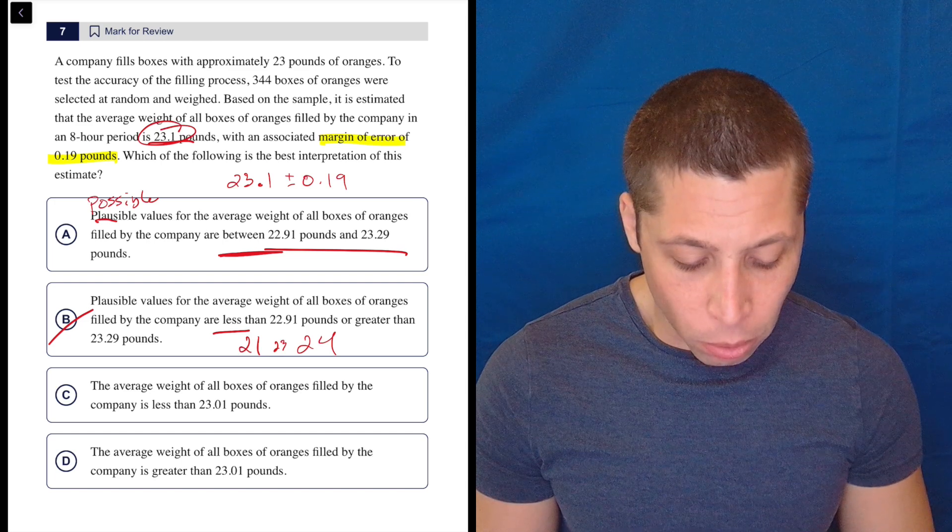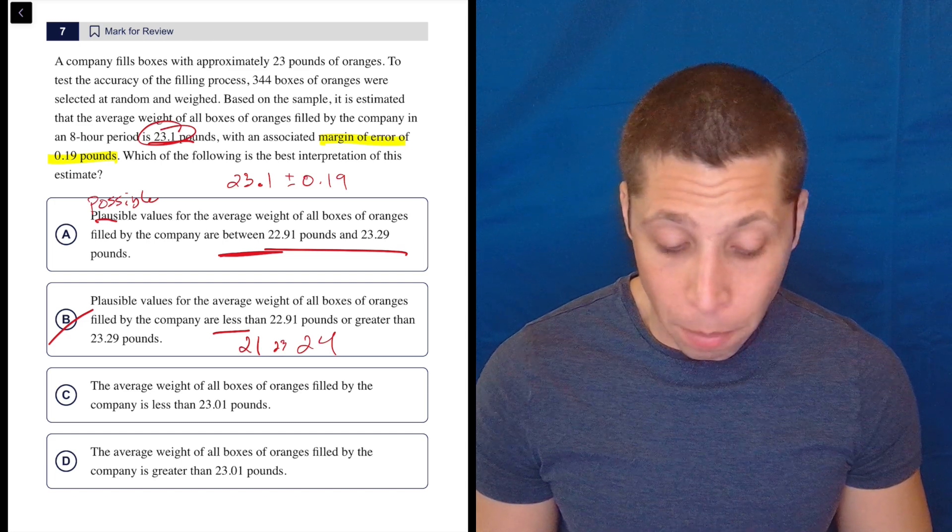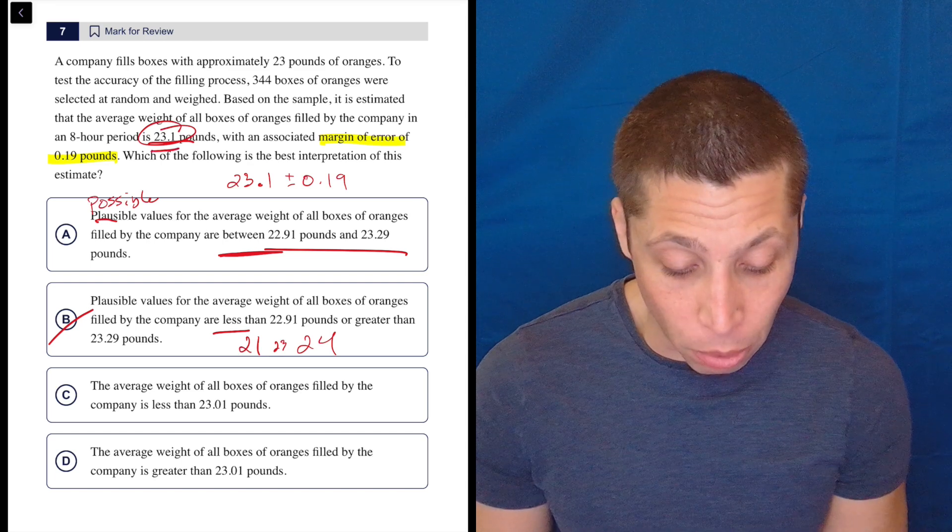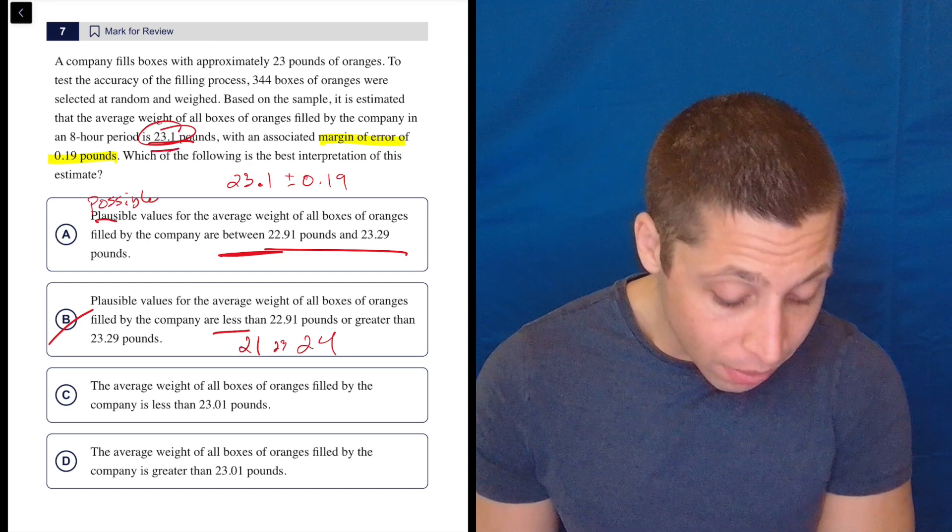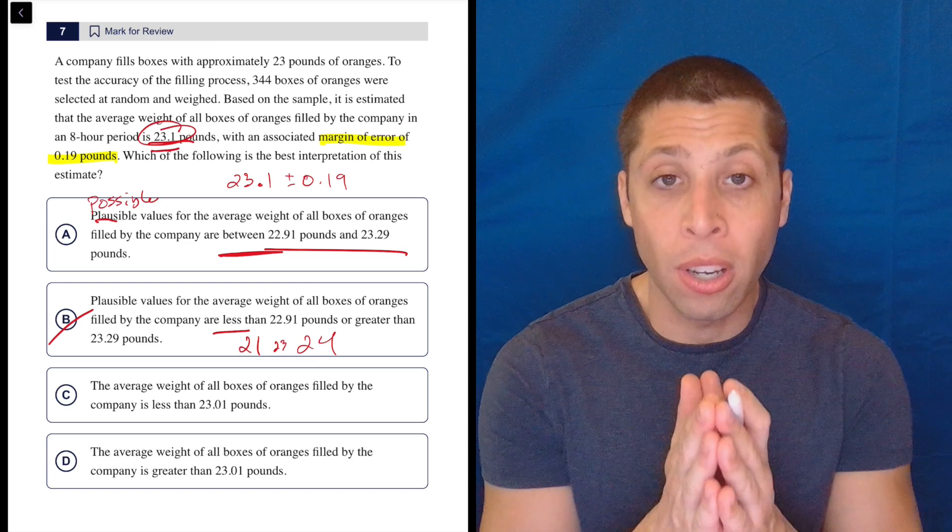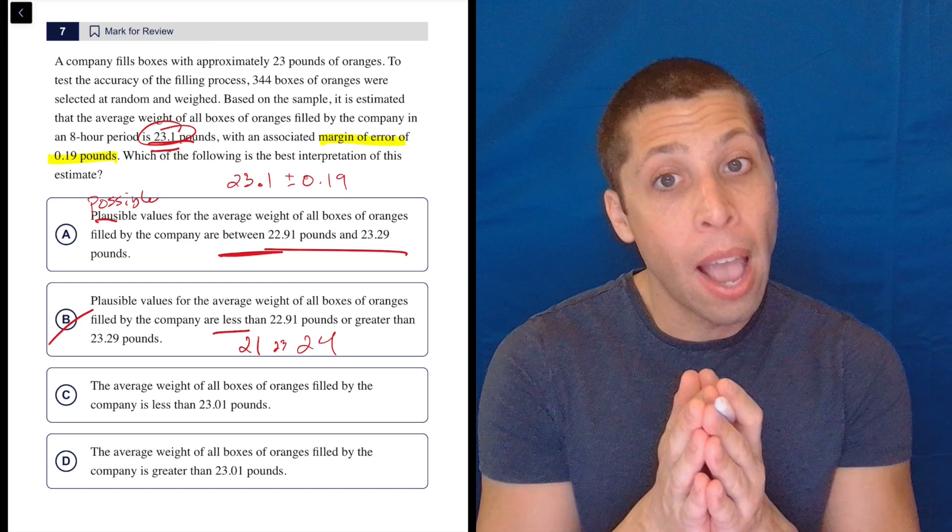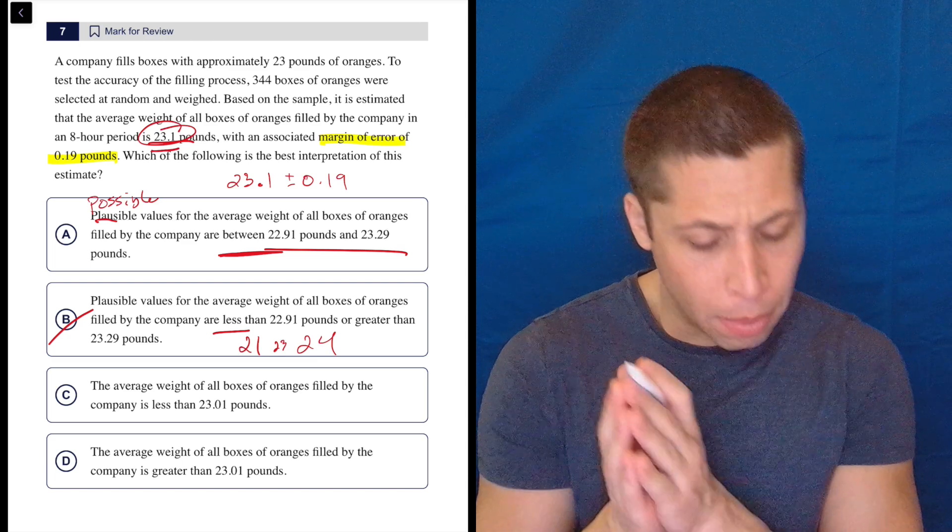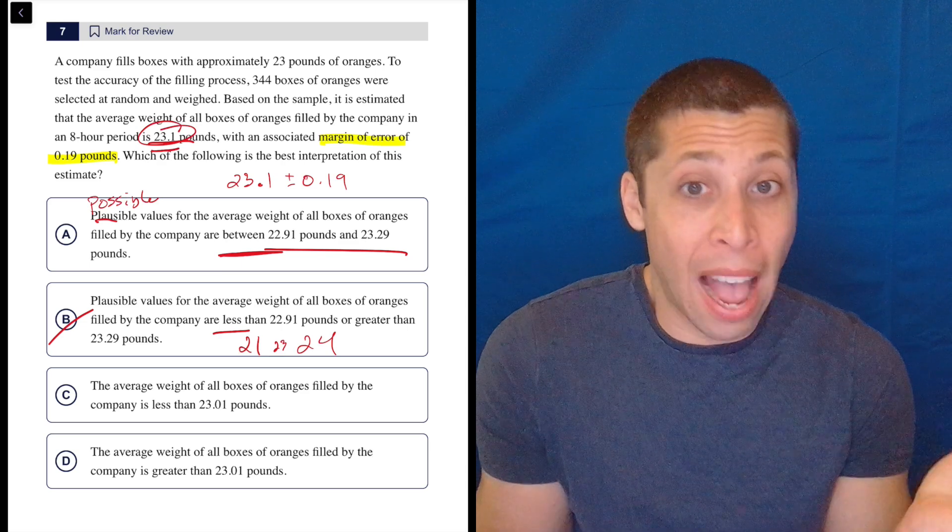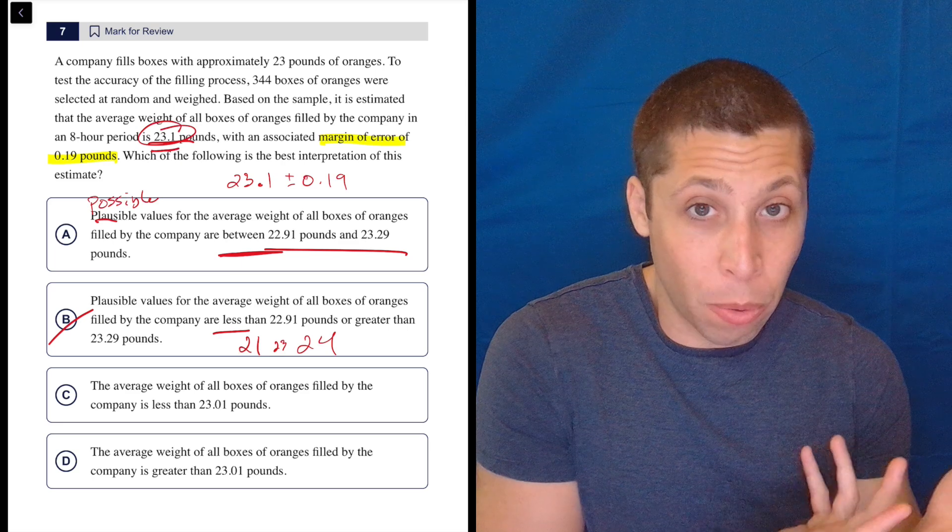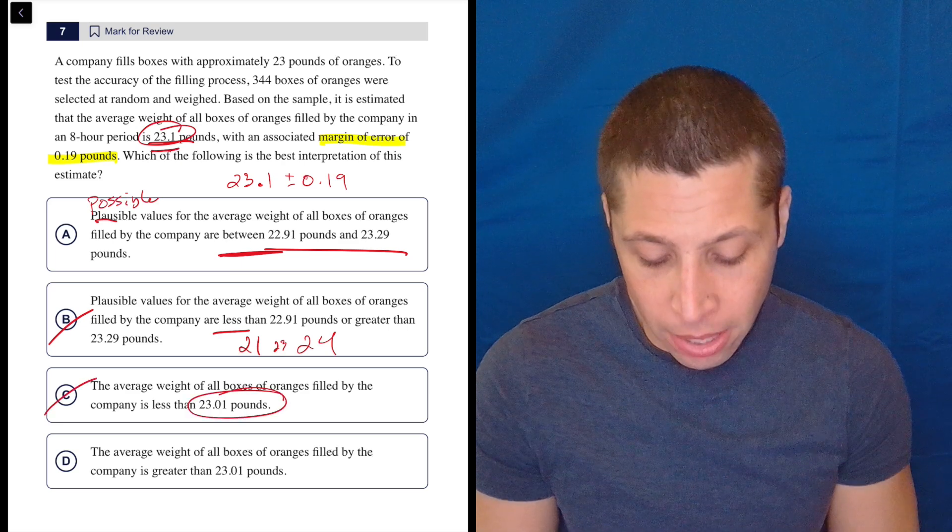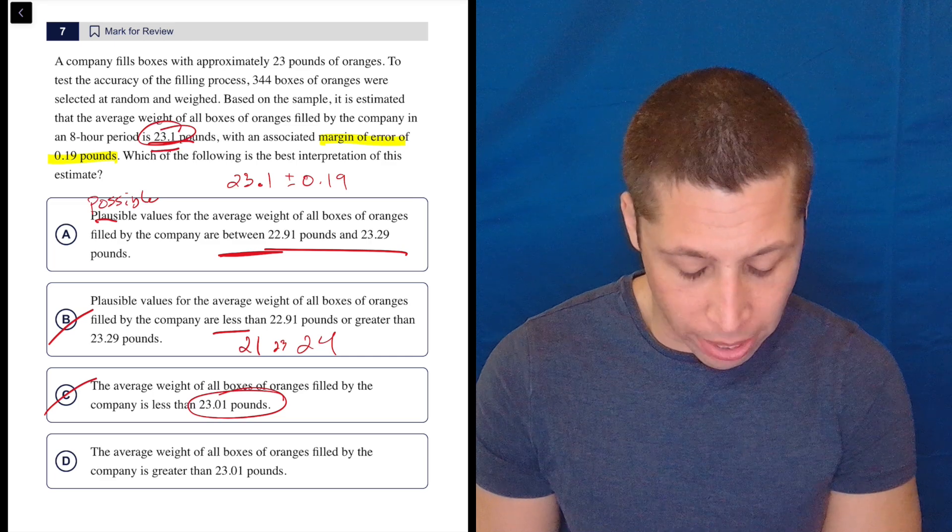C, the average weight of all the boxes of oranges filled by the company is less than 23.01 pounds. Now, to me, that sounds like just a random number. I don't know where that's coming from. I see 23.1 here. But still, even that is not right because we want to have a range, right? There's this 23.1 and we can go a little higher and a little lower, but less than 23.01, it doesn't have to be. It could be a little bit greater than 23.1, which would make it greater than 23.01. So I don't know where this number is coming from. I've double-checked it. It's not a typo, but it just seems random.